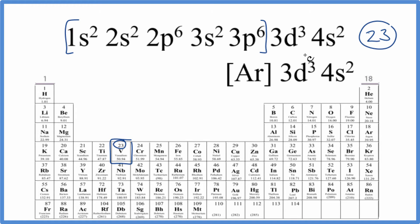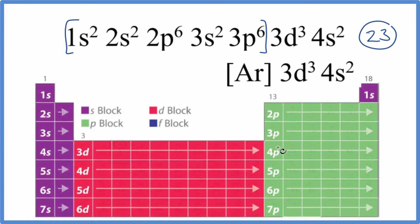We could also look at the periodic table broken up into blocks. So we're looking for the element here that ends in 3D3, 4S2. These are the valence electrons.